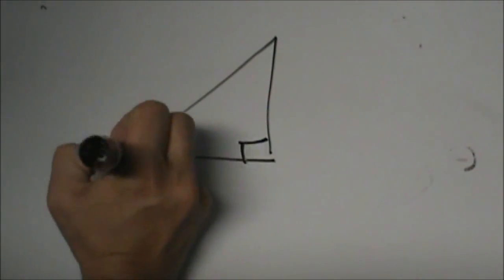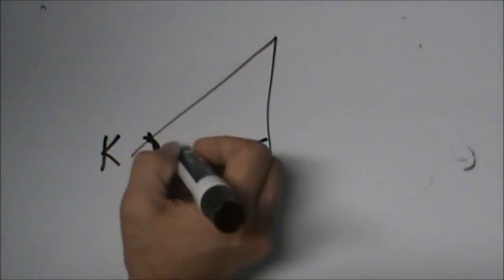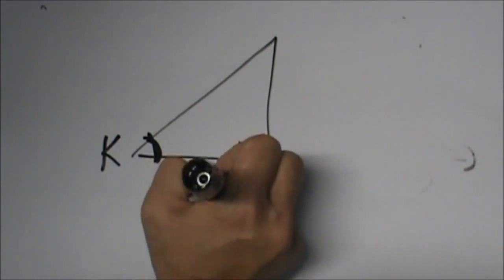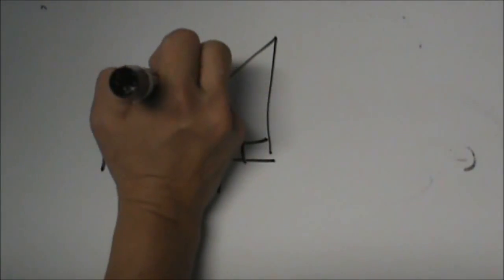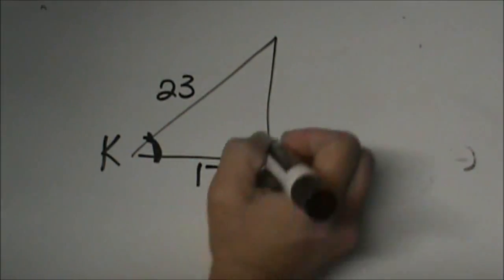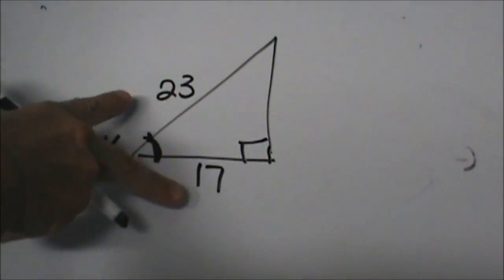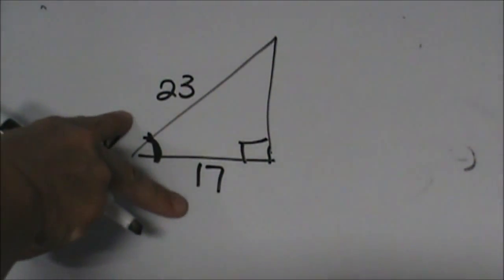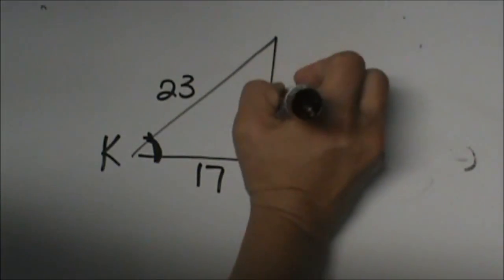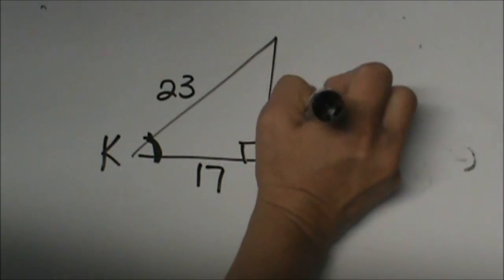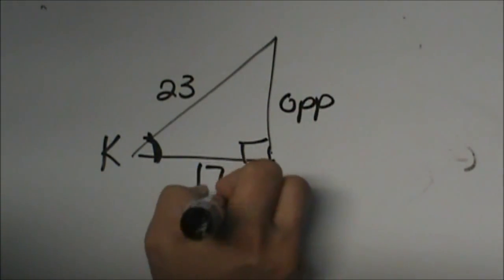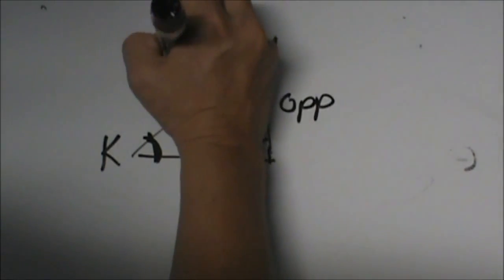K is over here, so I am working from this angle, and I have 17 on this side and 23 on this side. So from angle K, which two sides are these? This one is the opposite, this one is the adjacent leg, and this one is the hypotenuse.